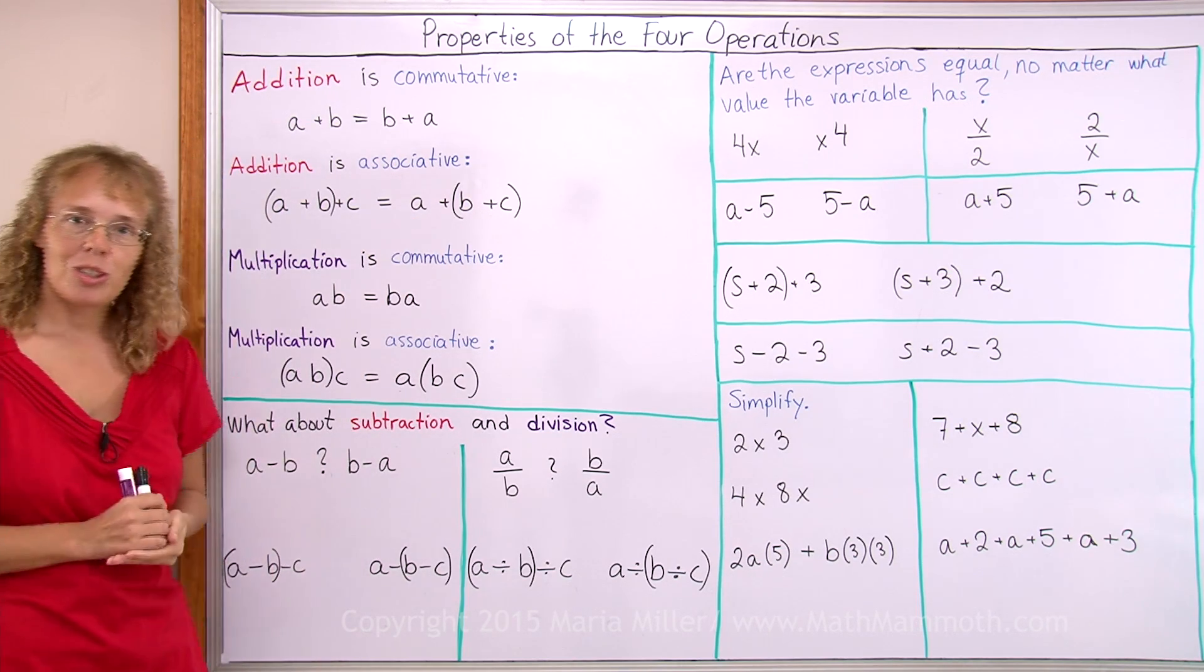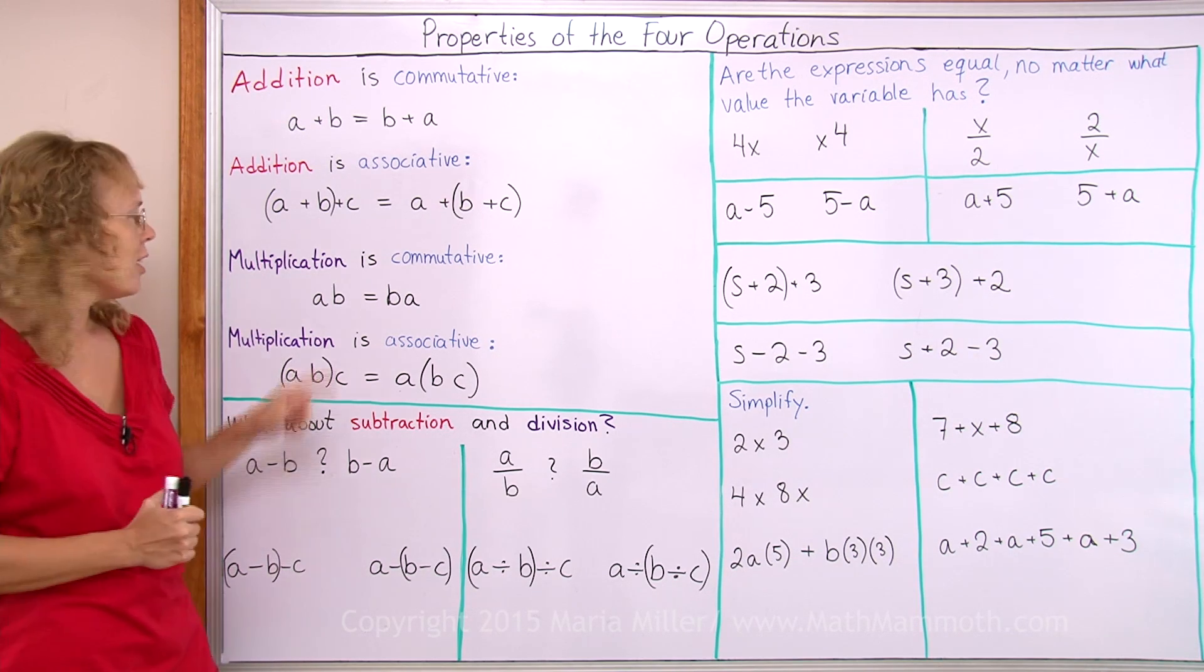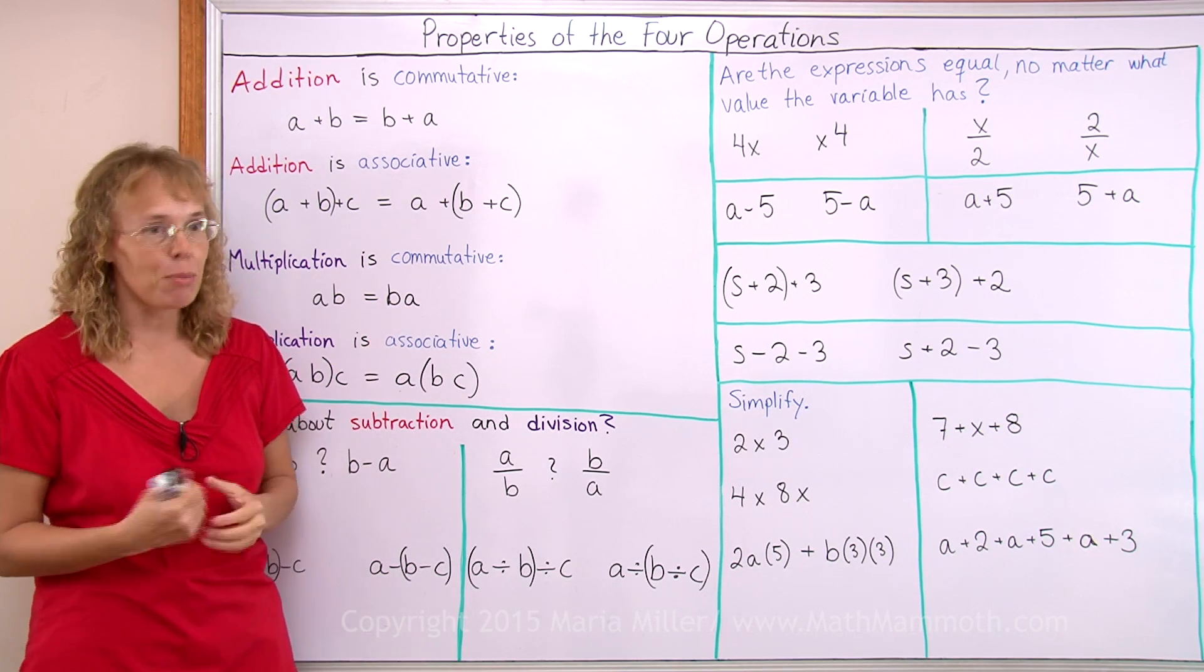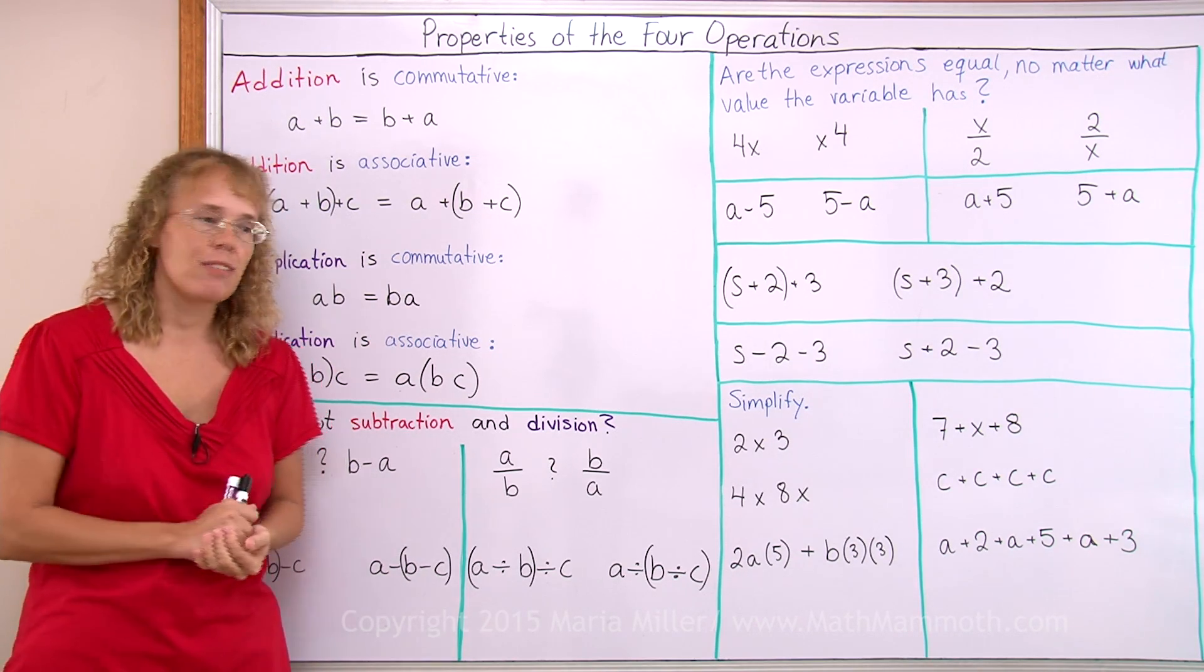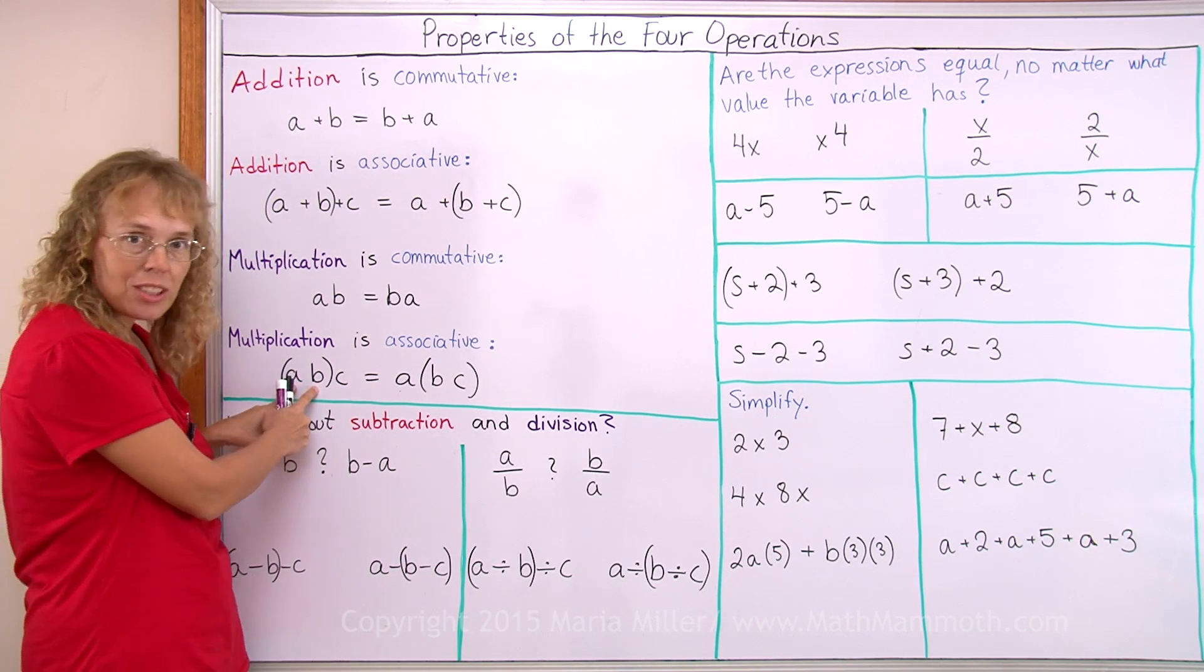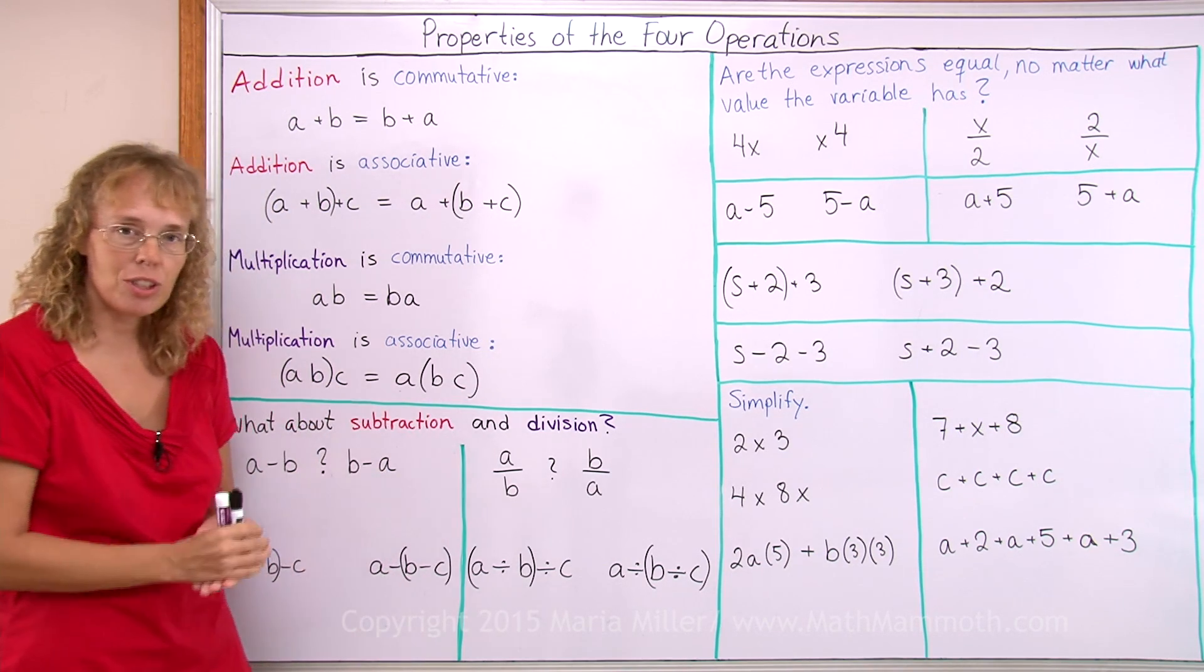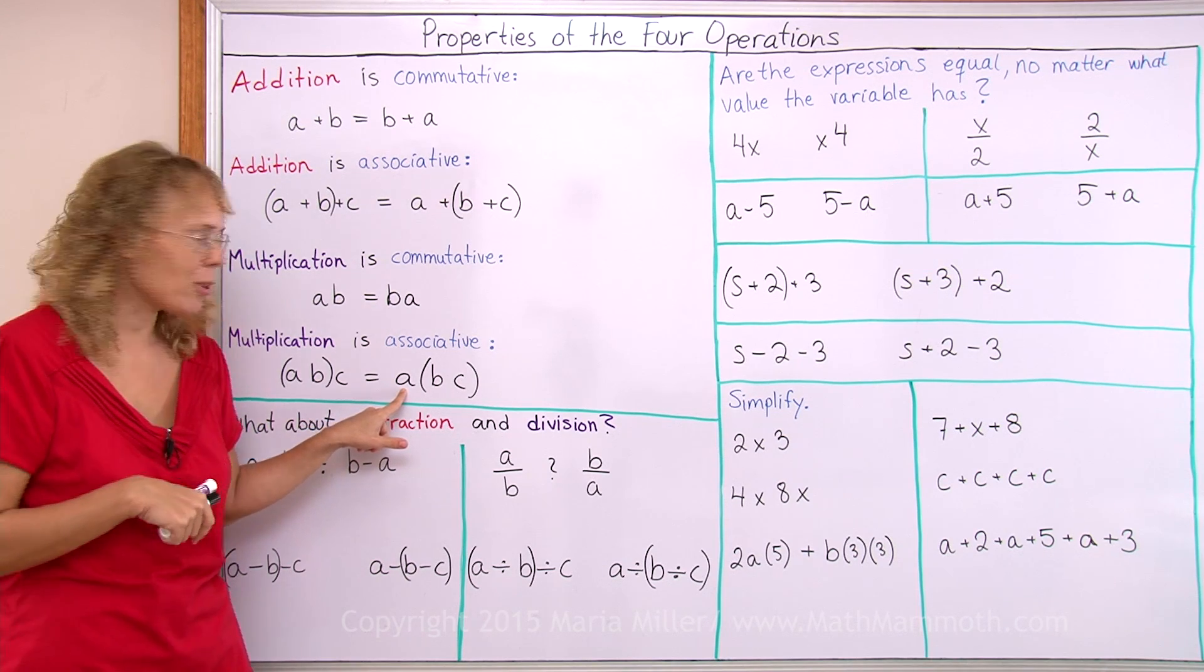These two properties are true also for multiplication. Multiplication is commutative. 5 times 4 is the same as 4 times 5, for example. And multiplication is also associative. If you have three numbers to multiply, you can multiply the first two first and then go on to multiply by the third number. Or you could multiply the last two first and then go on by multiplying by the first number here.